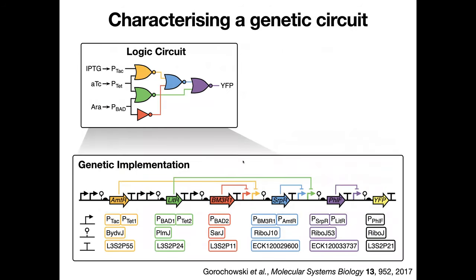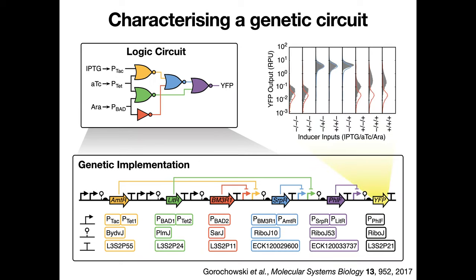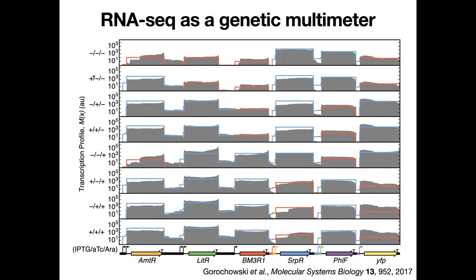We've applied this approach to a large three-input genetic logic circuit composed of more than 40 different genetic parts. When we put this circuit into a living cell and test its functionality using flow cytometry, we find that for many combinations of inputs the response matches our expected output — it's only really the last three input combinations where we see some deviations. To understand those deviations, we sampled the circuit for each input combination, performed RNA sequencing, and generated transcriptional profiles giving an overview of RNA polymerase flow across the entire circuit.